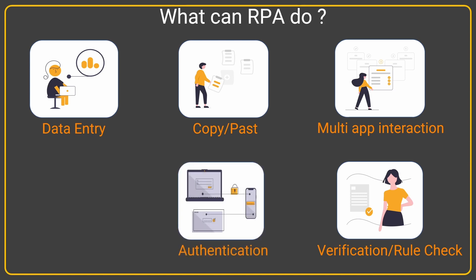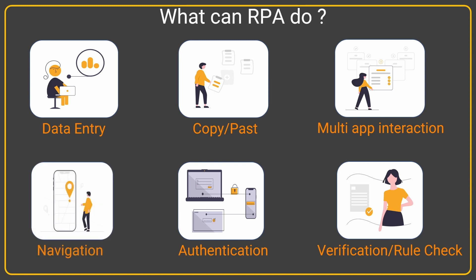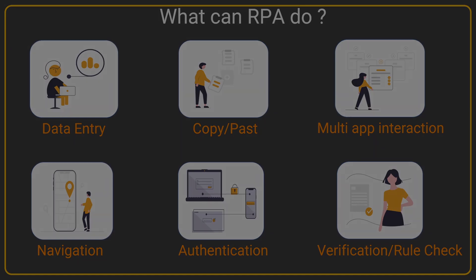Authentication — it can validate whether things are correct — as well as navigation, going from one application or one screen to another screen doing tasks. These are some very common use cases where RPA can be applied. These tasks are laborious and monotonous for a human being, but they can be recorded, automated, and then executed again and again by the computer itself, saving a tremendous amount of time.